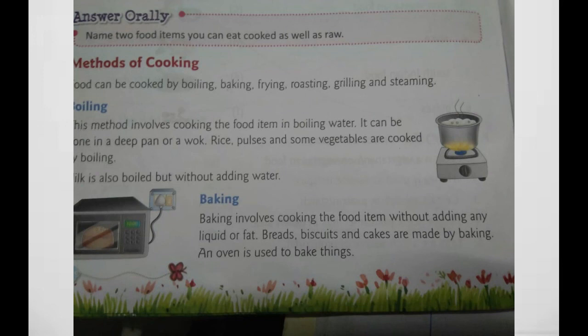What are the different methods of cooking? Food can be cooked by boiling, baking, frying, roasting, grilling, and steaming. Boiling involves cooking the food item in boiling water. It can be done in a deep pan or a wok. Rice, pulses, and some vegetables are cooked by boiling.